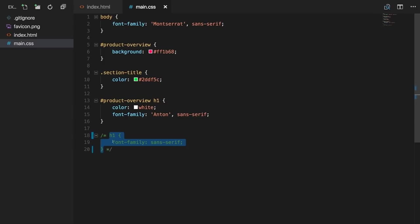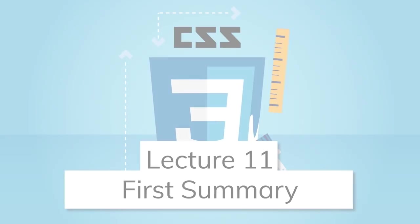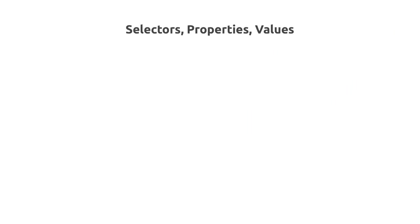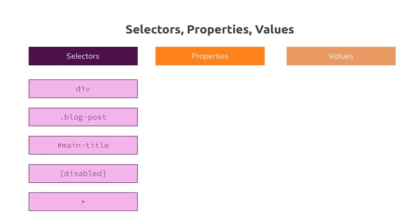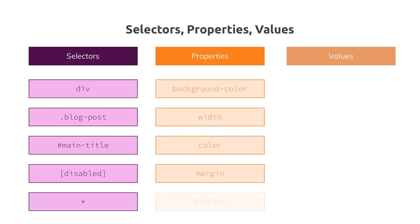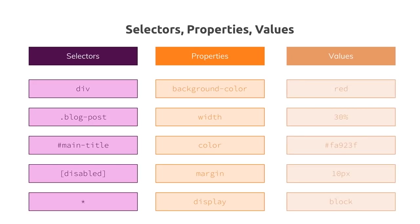To recap the foundations from this module: selectors are things like div, .blog-post, #main-title, [disabled], or the universal selector. Properties are things like background-color, color, margin, and display. Values are things like red, percentages, hex codes, pixels, or clearly defined keywords like block. All of these are things we'll continue to use throughout the course.